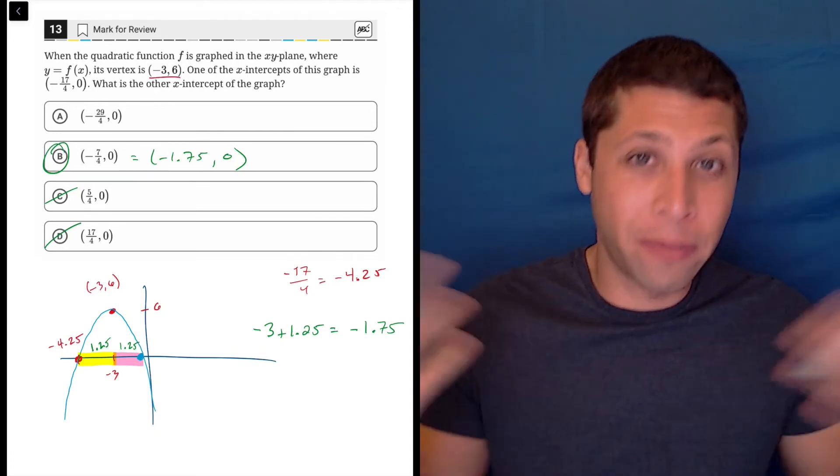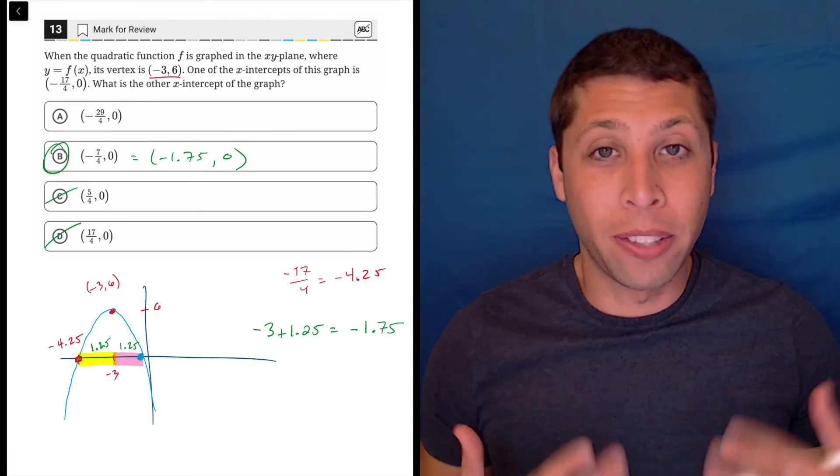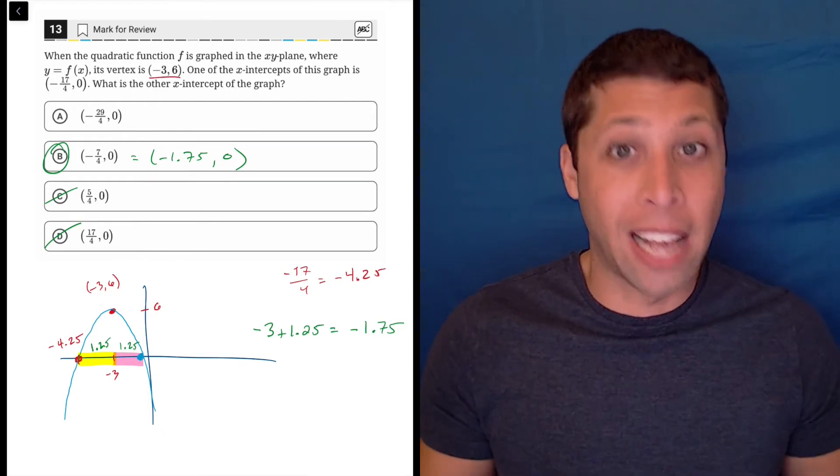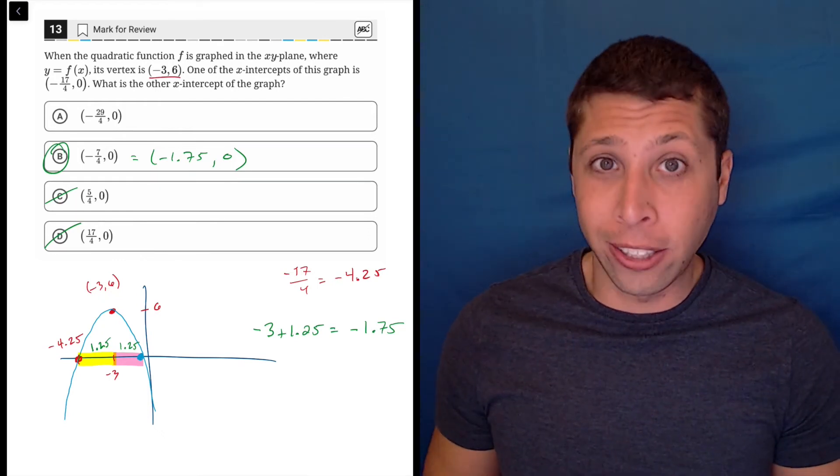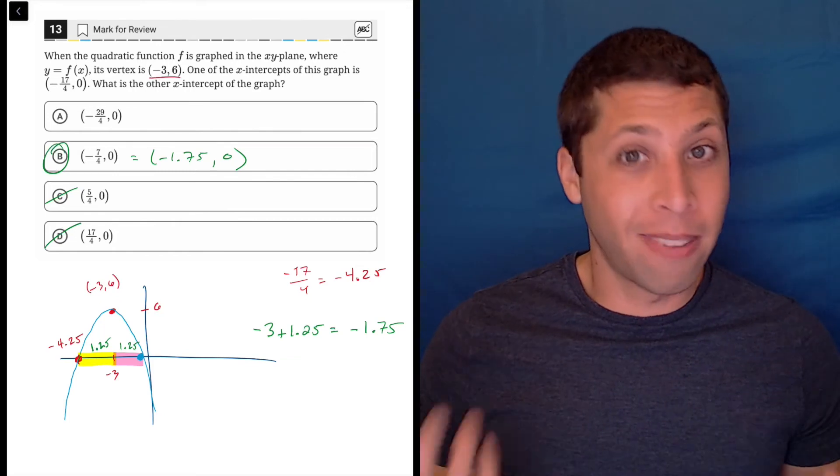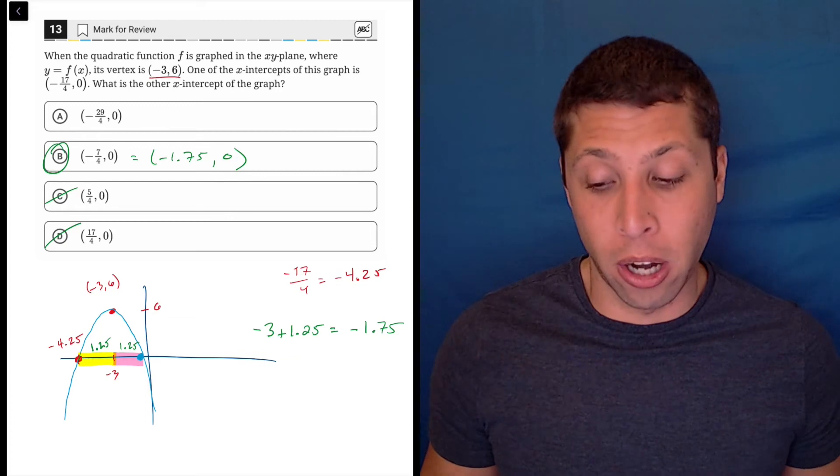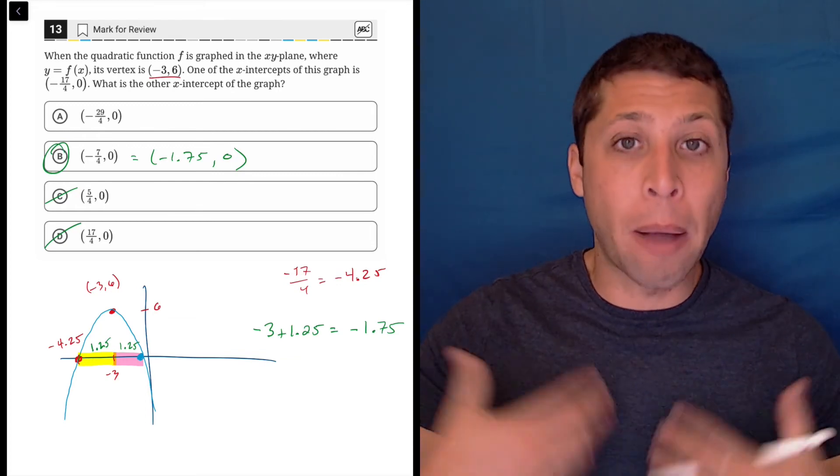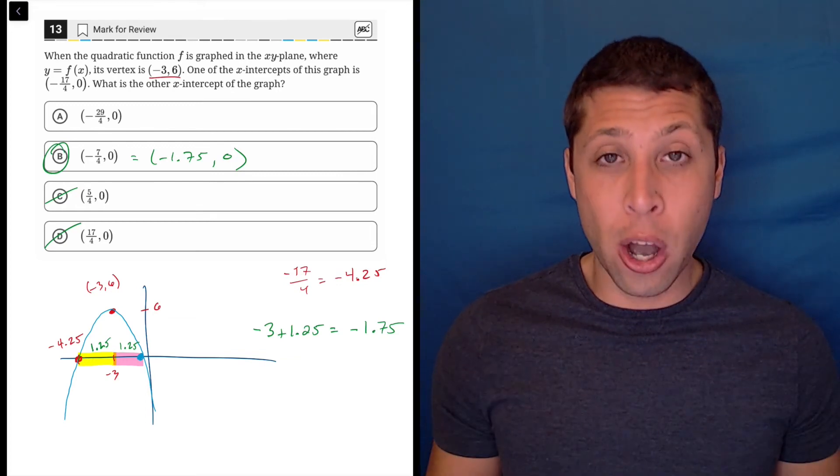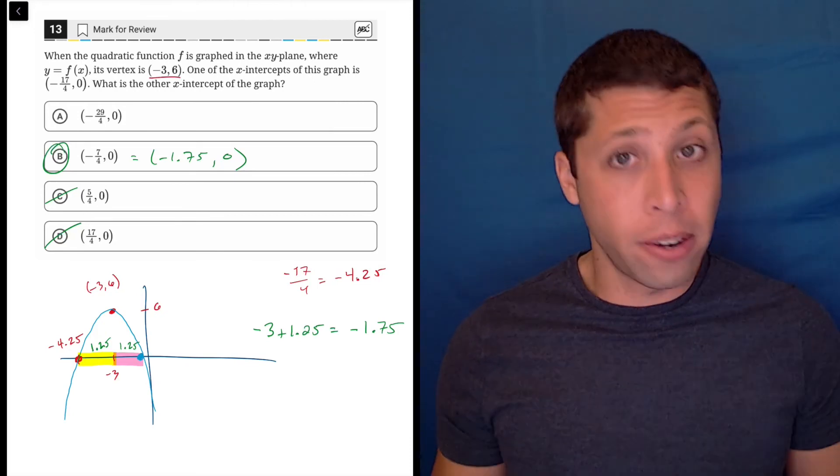So sometimes we have this big fancy graphing calculator built into our test. We might bring our own graphing calculator that's super fancy. But honestly, we didn't really need it. We just drew a sketch by hand and we were able to see what's going on. And so there are a lot of things about parabolas that we need to memorize and know. And here we used one that's very fundamental.